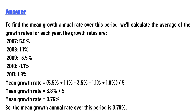2007: 5.5%, 2008: 1.1%, 2009: minus 3.5%, 2010: minus 1.1%, 2011: 1.8%. Mean growth rate = (5.5% + 1.1% − 3.5% − 1.1% + 1.8%) divided by 5.